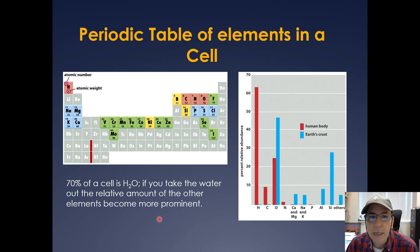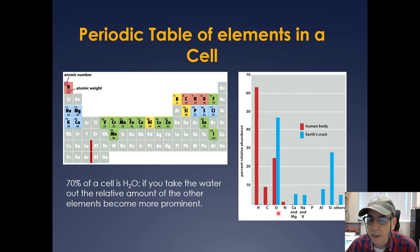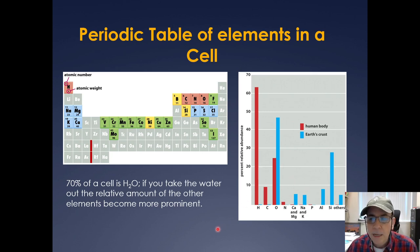Here's another way to look at the elements in a cell — they're color-coded here. Seventy percent of the cell is water, and if you take out the water, the relative amounts of the other elements become a lot more prominent. Comparing the human body to the earth's crust, we're very enriched in hydrogen, carbon, oxygen, and nitrogen. The take-home message is that it takes a lot of energy to maintain this ordered state in the cell.